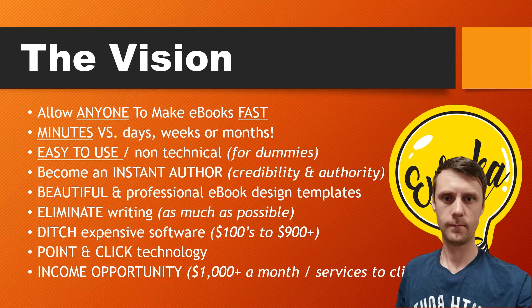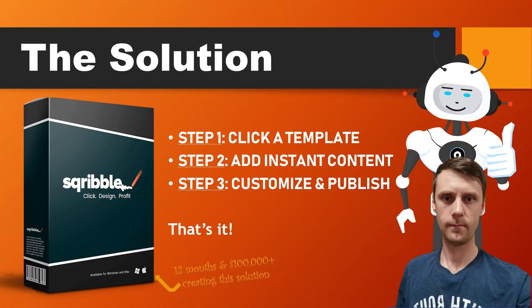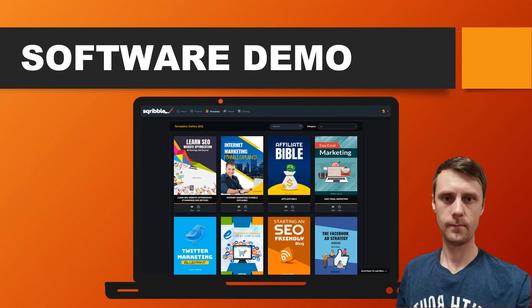One last goal in the vision behind Scribble was to allow anyone to have an income opportunity — not just to use the software for your own projects to create e-books, reports, and lead magnets, but also to use it as a dual-purpose tool to make at least $1,000 a month by selling services to clients. The solution took 12 months and around $100,000 to create. It's called Scribble — click, design, and profit. There are really just three easy steps: click a template, add instant content, then customize and publish.